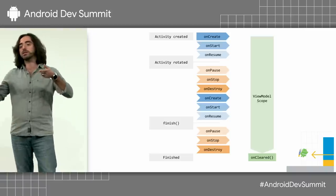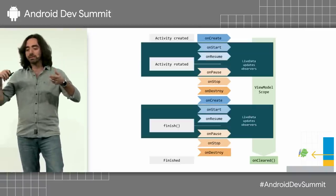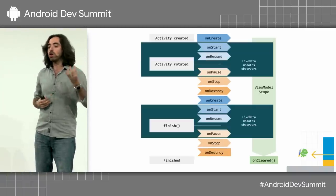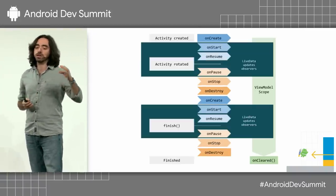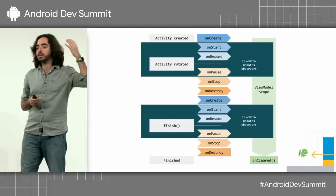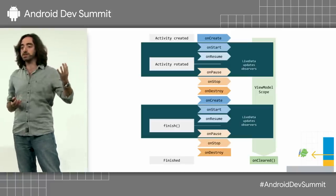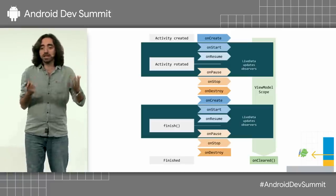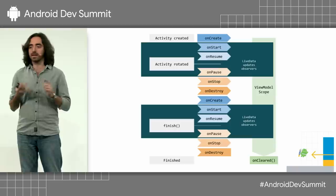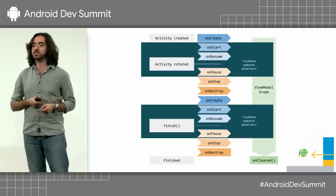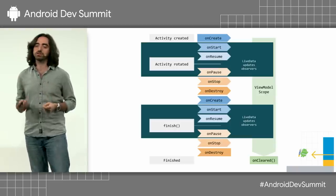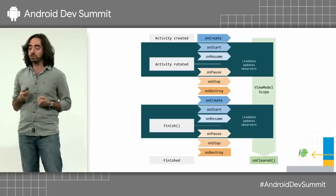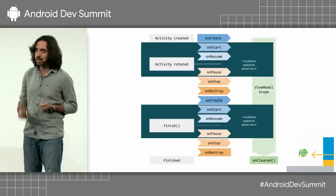If you go back to the previous graph, your LiveData observer will only be called if it is between started and before it is stopped. This makes sure you don't need to care about things like fragment transactions. Once you receive an observable value, you know you're in a good state.